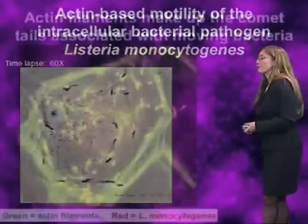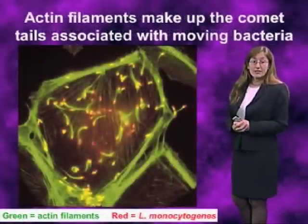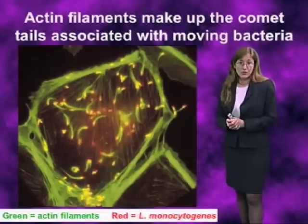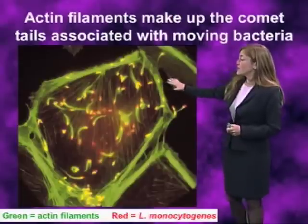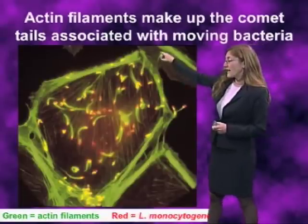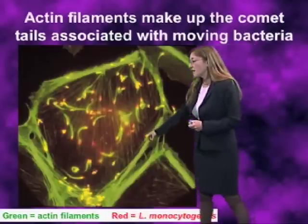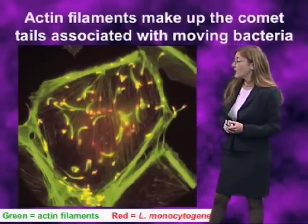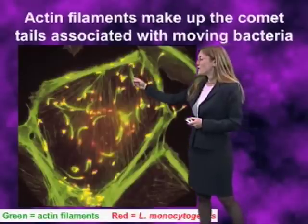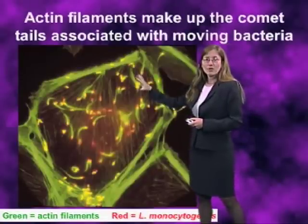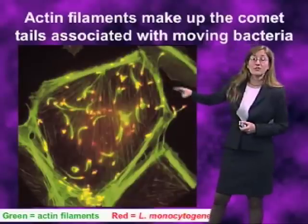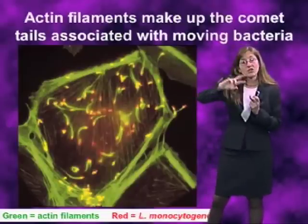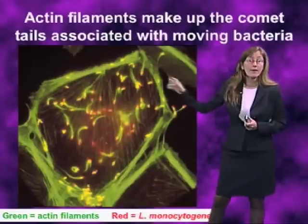Looking more closely, here we've taken an epithelial cell infected with these bacteria, fixed it, and stained it with the mushroom toxin phalloidin, which specifically labels actin filaments. In this epithelial cell, you see several kinds of actin structures: edge fibers along the sides, stress fibers running throughout, and associated with each bacterium — these little red spots — either a cloud or a streak of actin filaments. Every bacterium that has a streak of actin filaments coming out the back was moving rapidly at the time the cell was fixed.